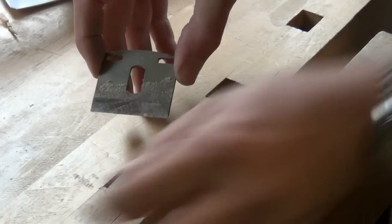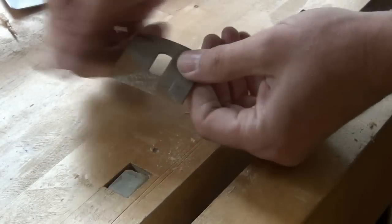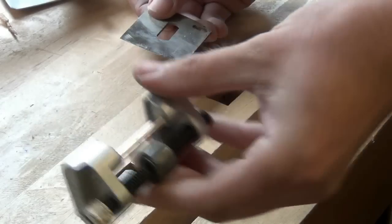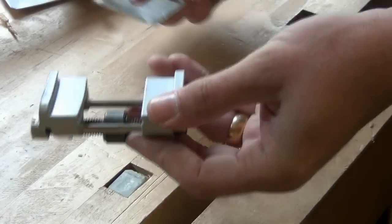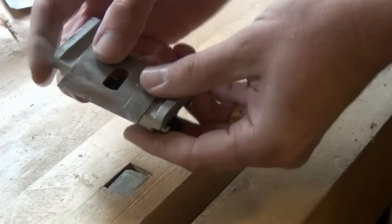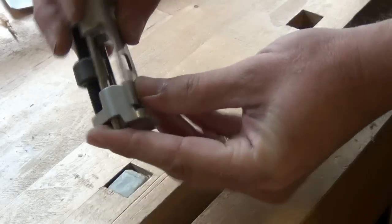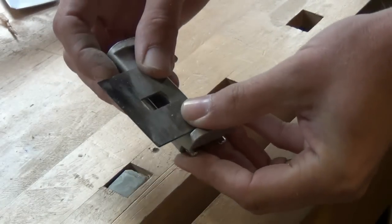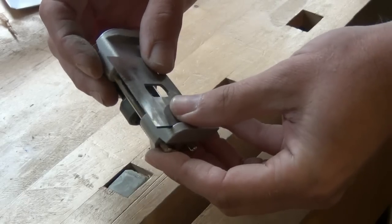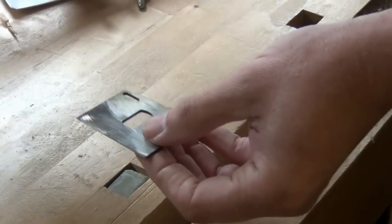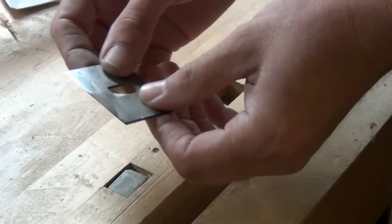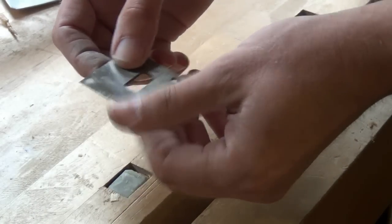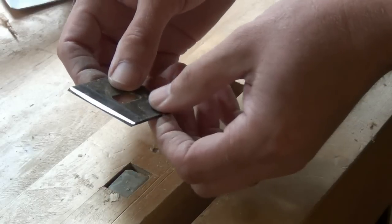One of the usual jigs for sharpening plane blades is something like this, but I think you'll see that if we clamp this blade in there, we can never get enough projection to get the right sort of angle for sharpening. So it's either working it by hand, or if you've got a grinder, a grinder with a fine wheel is by far the quickest and easiest way to do it.